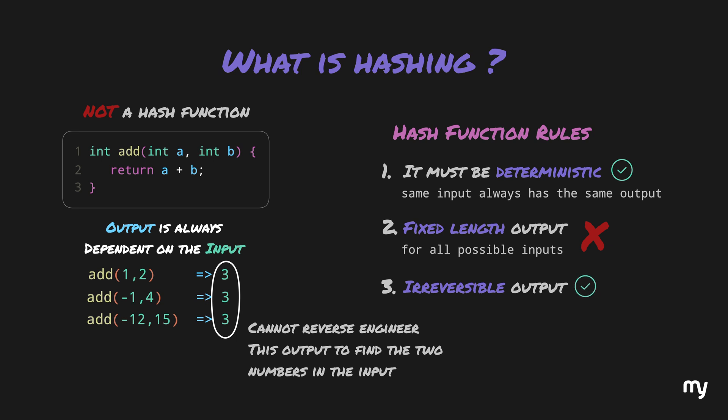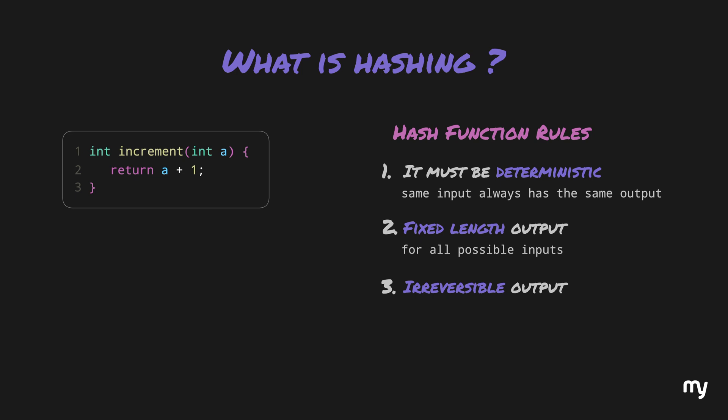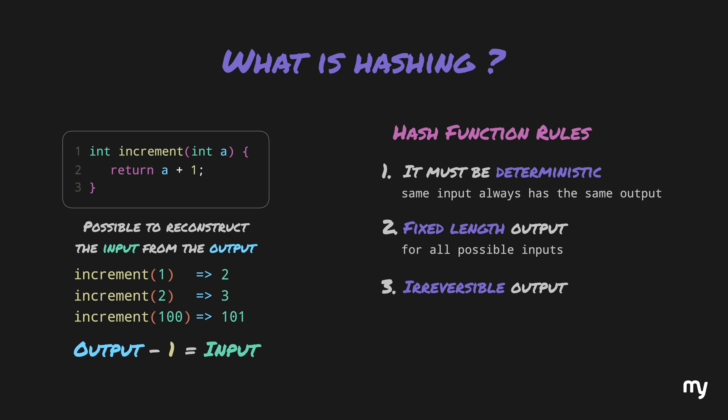Now, if we were to take a method which takes an integer, adds 1 and returns the value, it would be possible to reconstruct the input from the output. For example, if we tried passing the input 1, we would get 2. We try 2 and we would get 3. We try 100 and we get 101. Therefore, if we subtracted 1 from the output, we would be able to reconstruct the input. In this case, it would break rule number 3 as well, meaning the output becomes reversible.